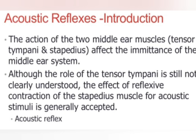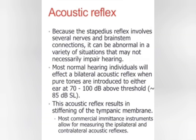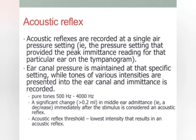The acoustic reflex involves the action of the tensor tympani and the stapedius muscles. When these muscles act, the compliance or stiffness of the tympanic membrane changes, and this change is recorded. It happens when you give a sound at around 85 dB above the hearing threshold level, which elicits the acoustic reflex, stiffening the tympanic membrane. A significant change in compliance is more than 0.2 ml, and this is picked up by the probe and recorded as the acoustic reflex.